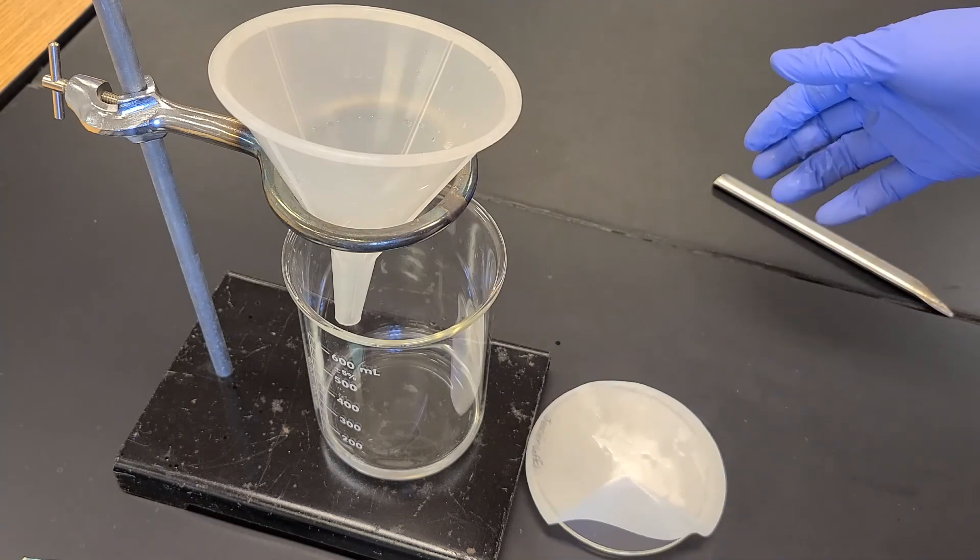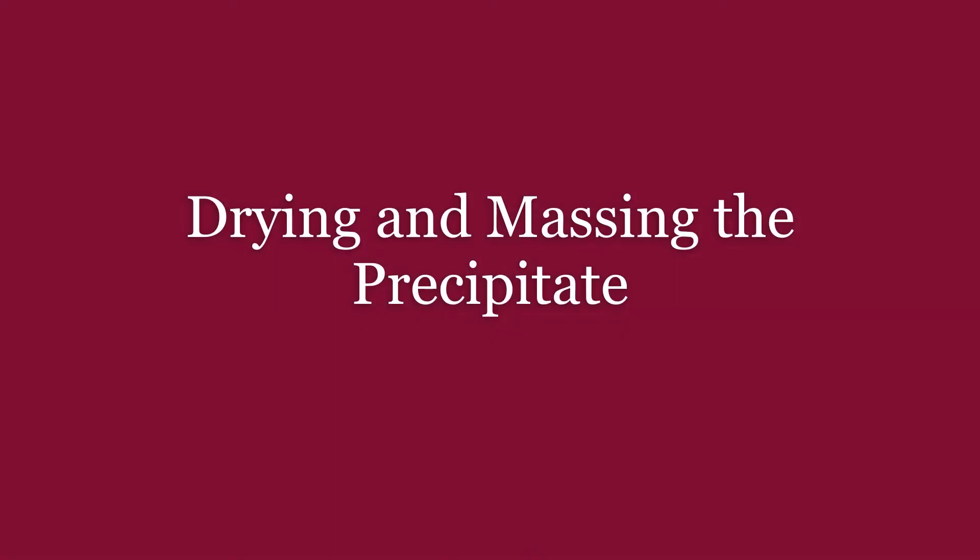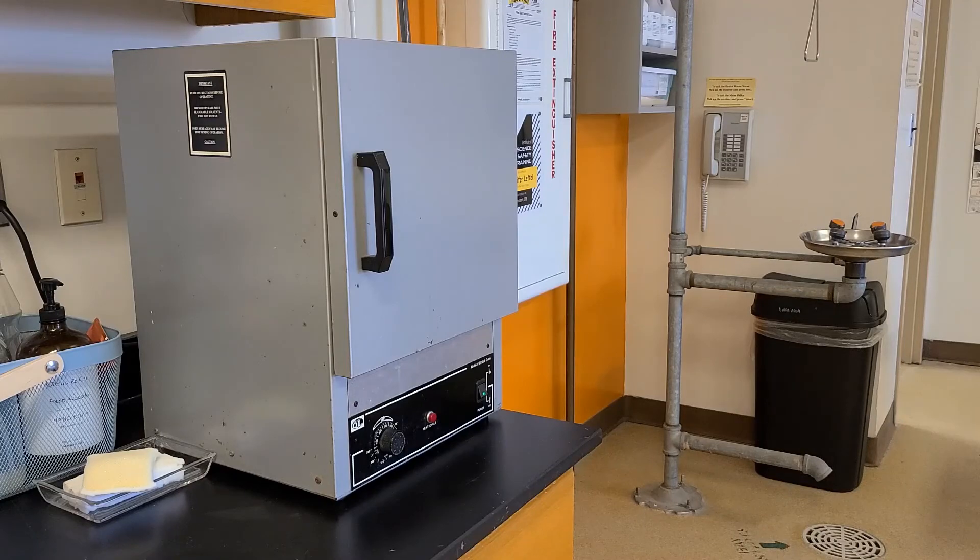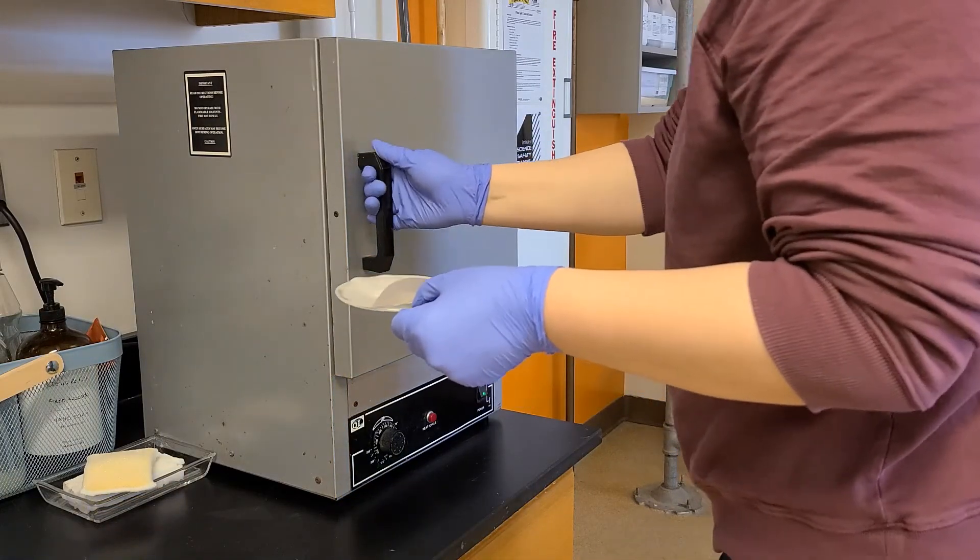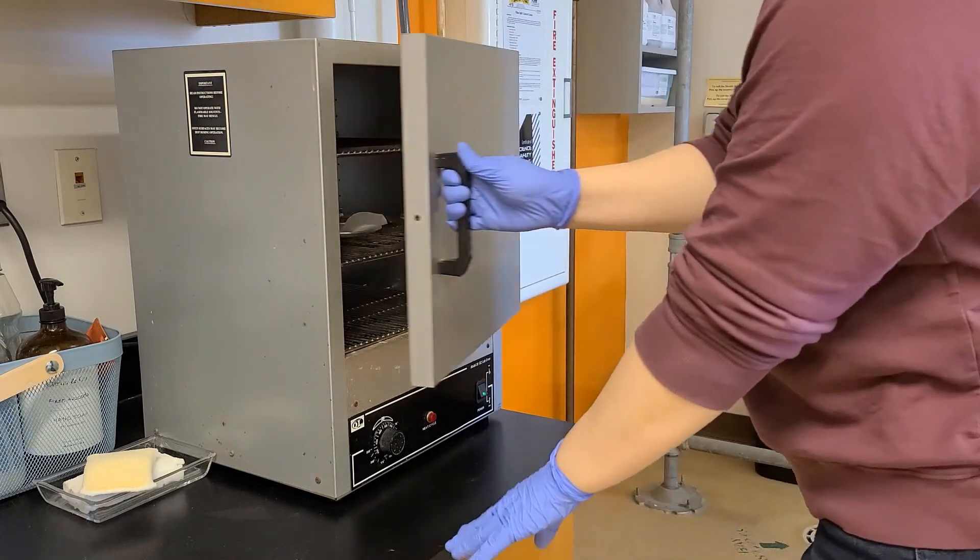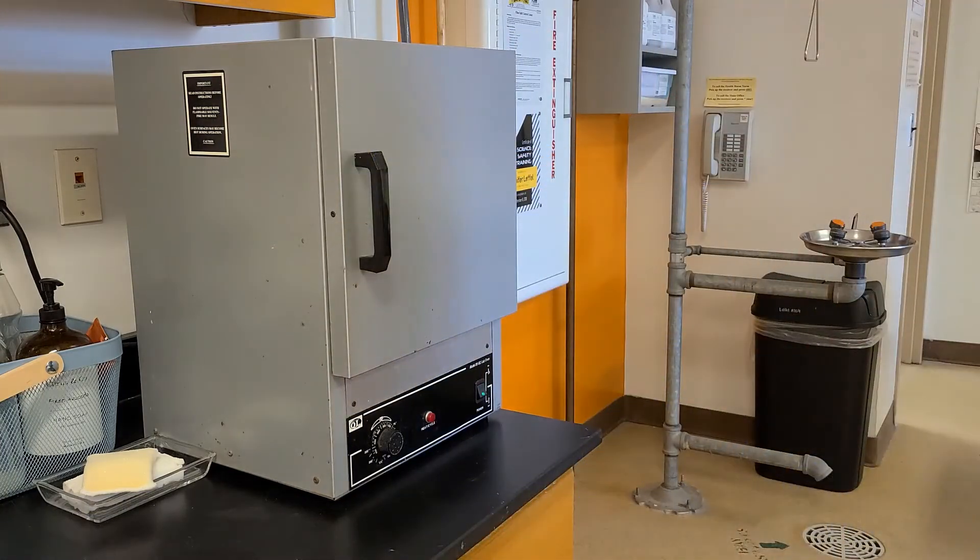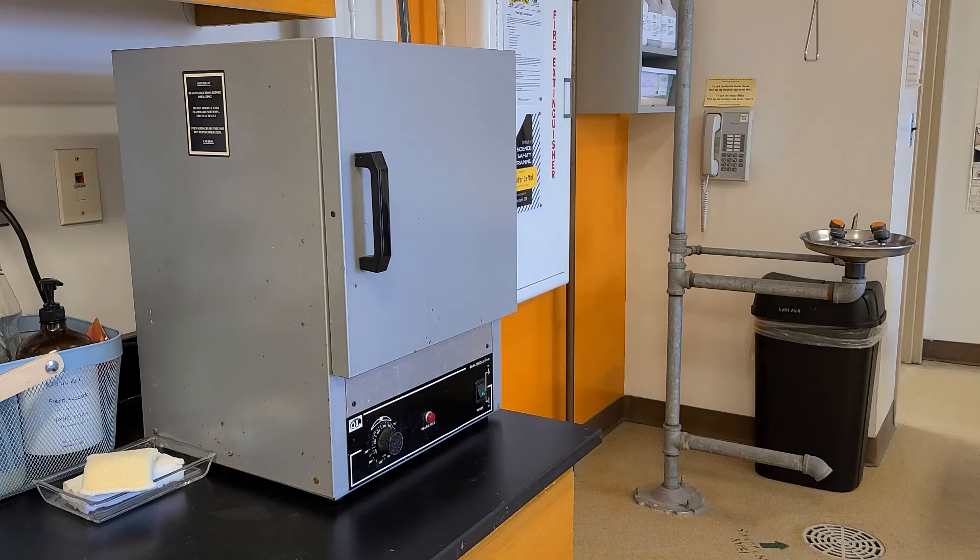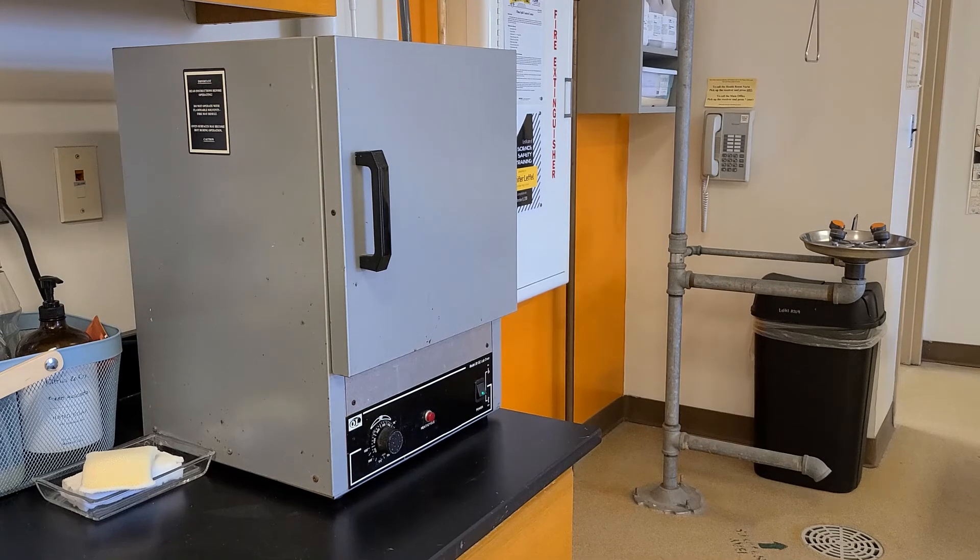Right now the sample is wet and we need to get rid of that water, so we're going to dry the precipitate in an oven. This oven is set to about 200 degrees Fahrenheit. It's not too warm, just needs to be hot enough to help dry that filter paper.